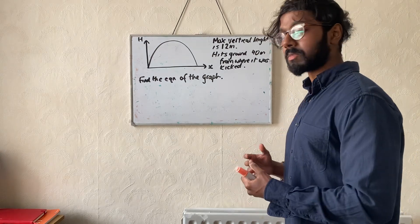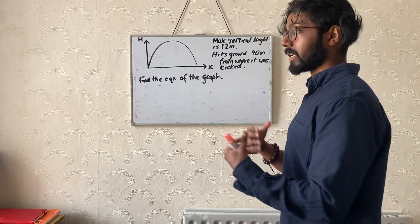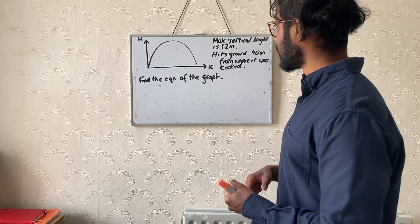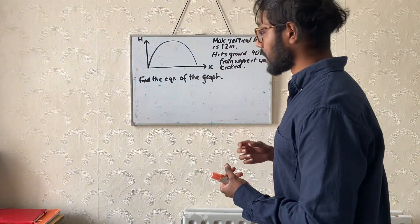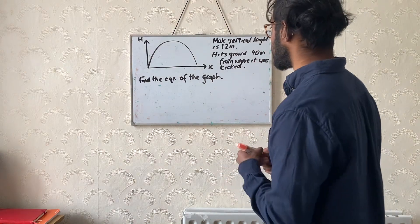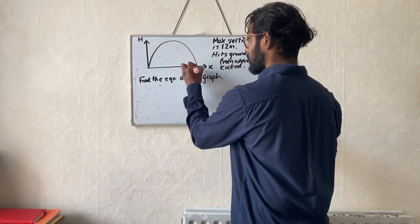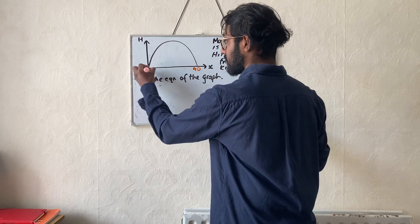This is one of the kind of problems where you're given a graph and you need to get the equation. One way we can do it is we can determine what the roots of the quadratic graph are. If it hits the ground 40 metres from where it was kicked, we can put 40 down here, x is 40, and over here we have x is zero.